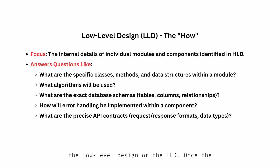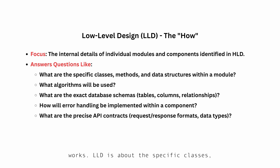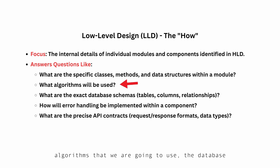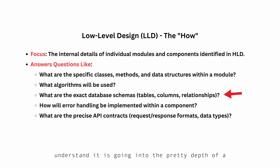Now let's zoom in to Low Level Design or LLD. Once the HLD gives us the overall structure, LLD fills in the details for each component — this is where we get specific about how each part actually works. LLD is about the specific classes, methods, and data structures within a service, the algorithms we are going to use, and the database schemas — what tables will exist, what columns they will have, and what relationships those columns would have. It's getting into the in-depth of how we are going to code a particular service.